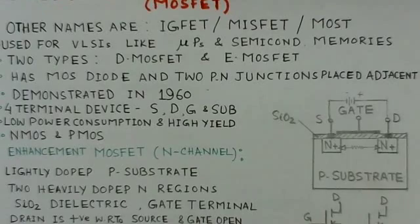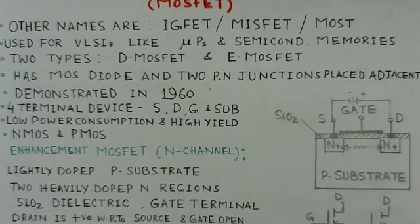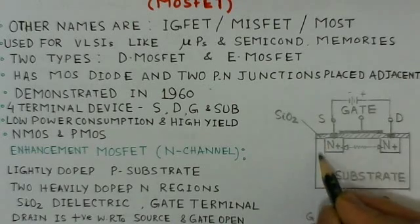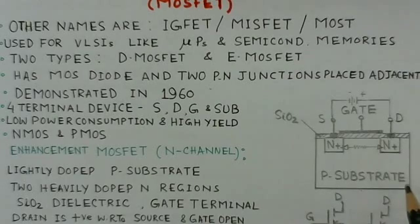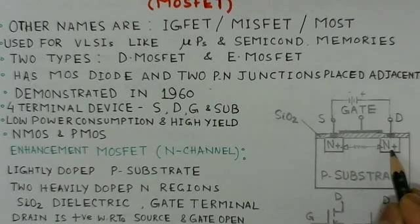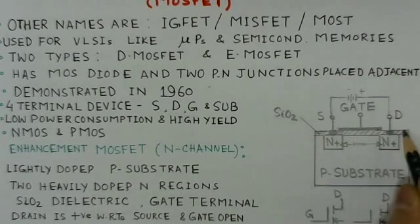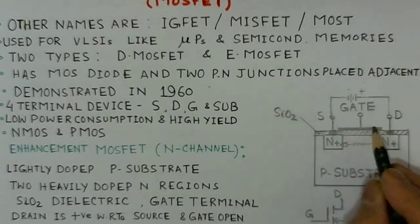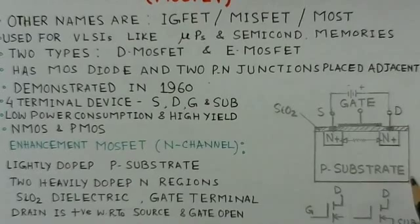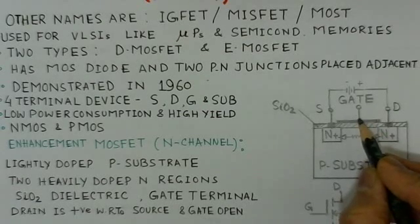We will talk about the enhancement MOSFET of N-channel type. The construction for this MOSFET is given here. There is a lightly doped P-substrate block on which two heavily doped N-regions are diffused. Then there is a silicon dioxide dielectric layer over the substrate, and there is a metallic contact for the gate. This metal, oxide, and semiconductor forms a MOS diode.